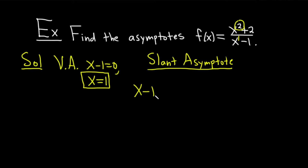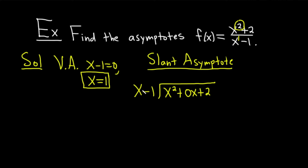Instead, it has something called a slant asymptote, also called an oblique asymptote. We know that because the degree in the numerator is exactly one bigger than the degree in the denominator. Whenever it's exactly one bigger, you have a slant asymptote. To find it, you use long division. Write x minus 1 with the division symbol, then x squared plus 0x plus 2 — using a placeholder for missing powers of x.